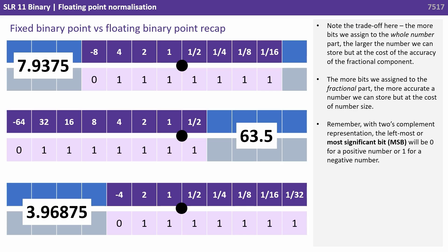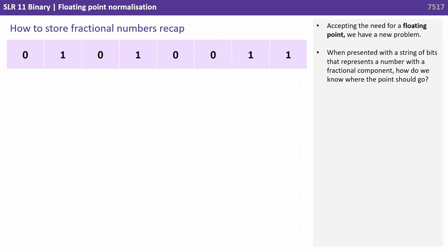Remember, with 2's complement representation the leftmost or most significant bit (MSB) will be 0 for a positive number or 1 for a negative number. Accepting the need for a floating point, we have a new problem: when presented with a string of bits that represent a number with a fractional component, how do we know where the point should go?